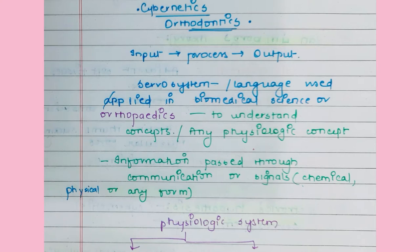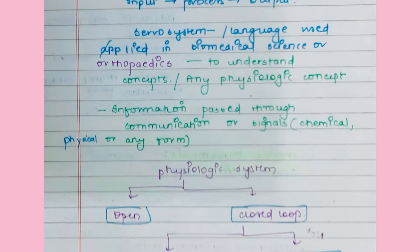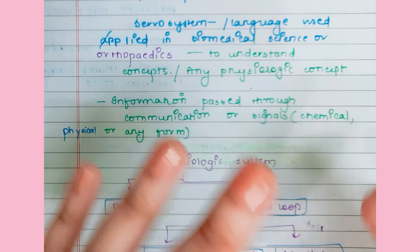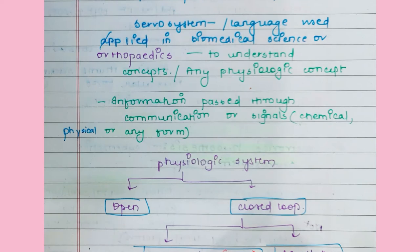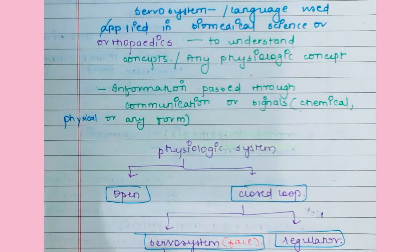This mechanism is applied in biomedical sciences and orthopedics to help people understand physiologic processes. We apply it in orthodontics as well. We will discuss how the craniofacial components — skeletal, non-skeletal units, spaces, and hormones — are all linked and work in harmony like a loop, affecting one another. Any changes in the maxilla will affect the mandible. Information is passed through signals, which can be physical, chemical, or other forms.